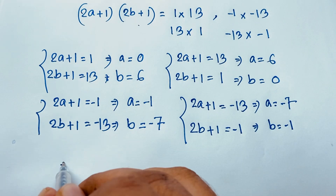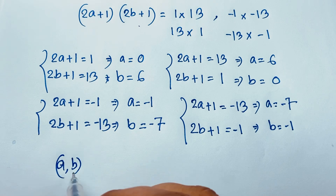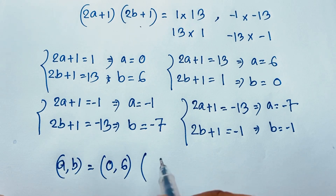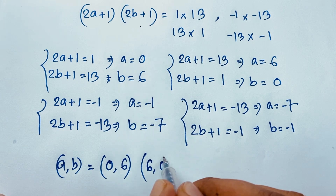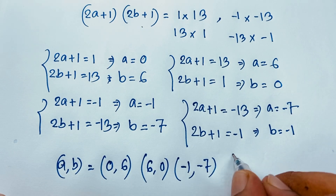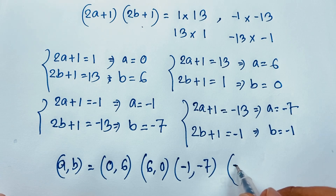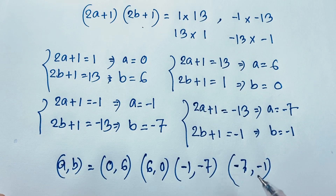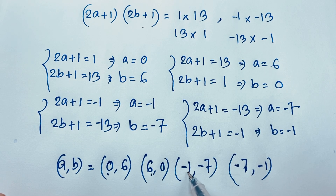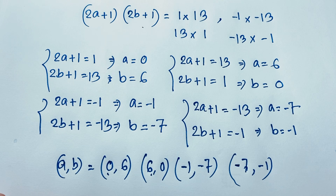So our final answers for (a, b) are: (0, 6), (6, 0), (-1, -7), and (-7, -1). Thank you all. If you enjoyed this video, please subscribe to my channel for other interesting videos. Goodbye, take care.